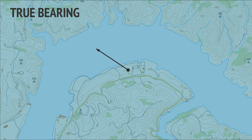And this direction, which makes a 305-degree clockwise angle from north, has a bearing of 305 degrees.